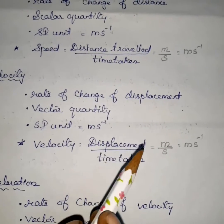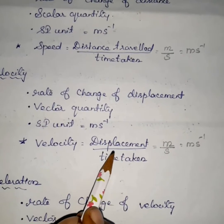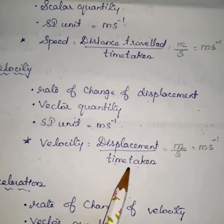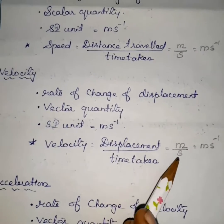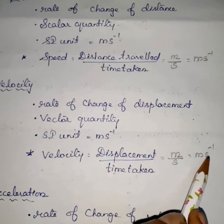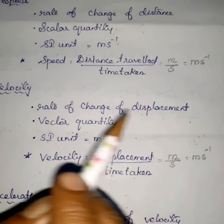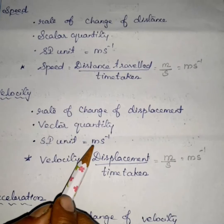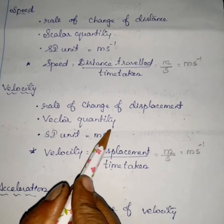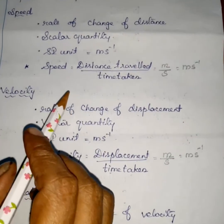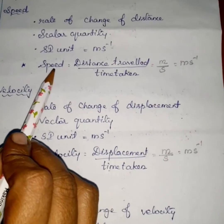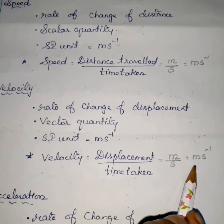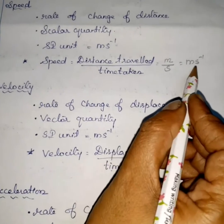The SI unit of displacement is meter, and the SI unit of time is second. So the SI unit of velocity is meter second power minus one. Both SI unit of speed and SI unit of velocity is meter second power minus one.